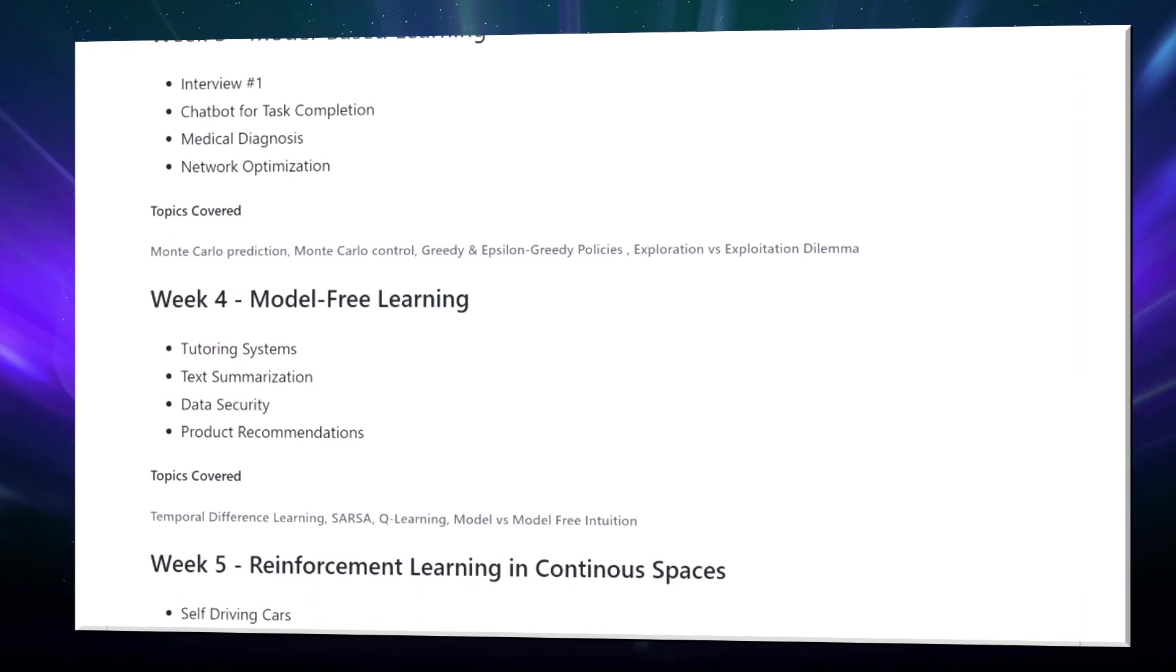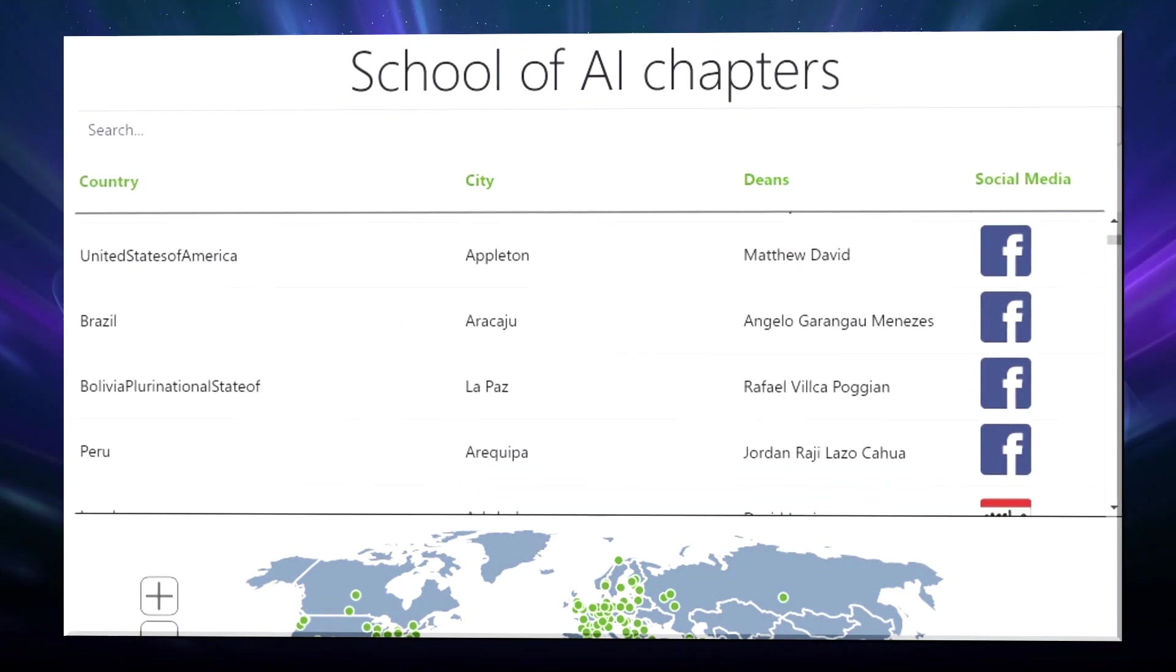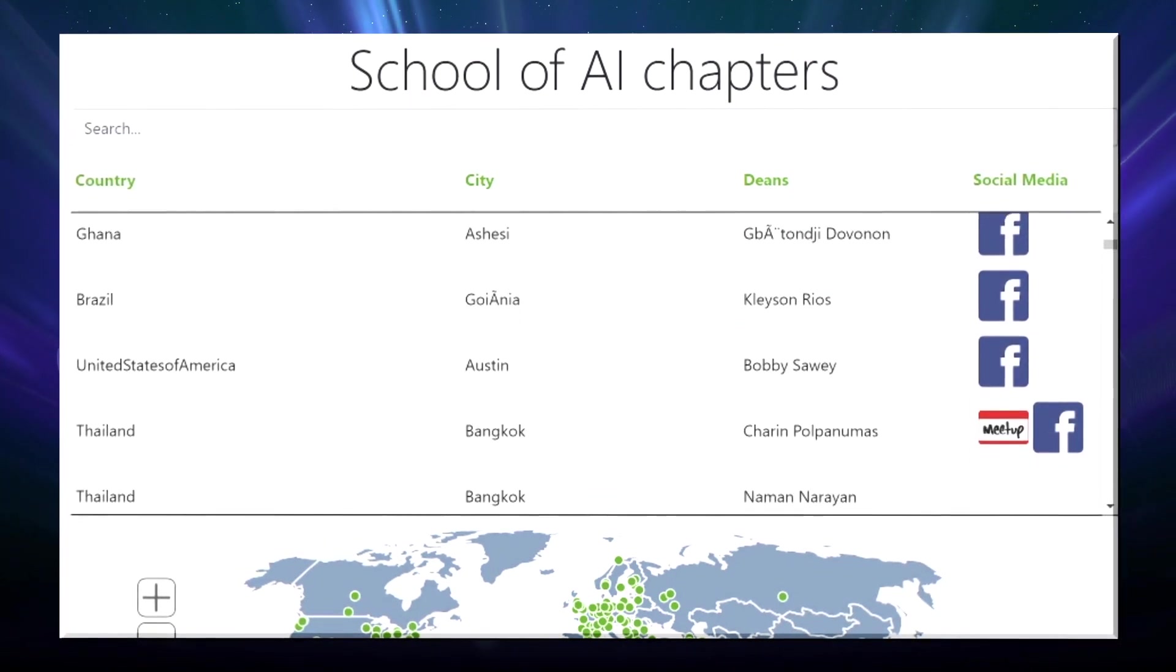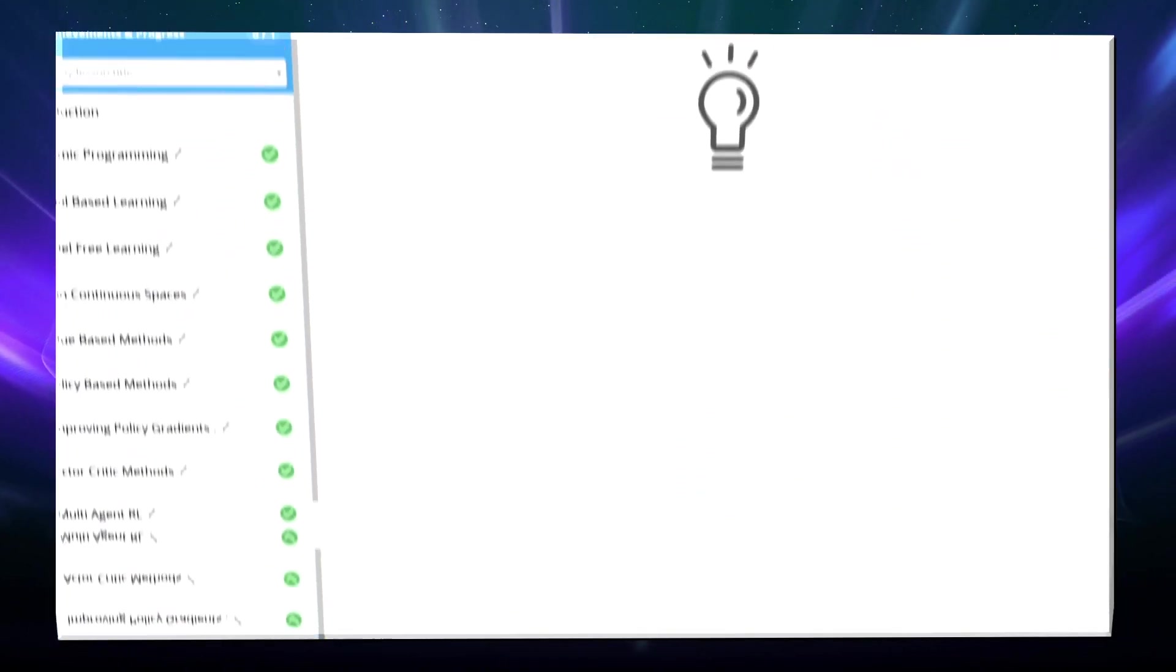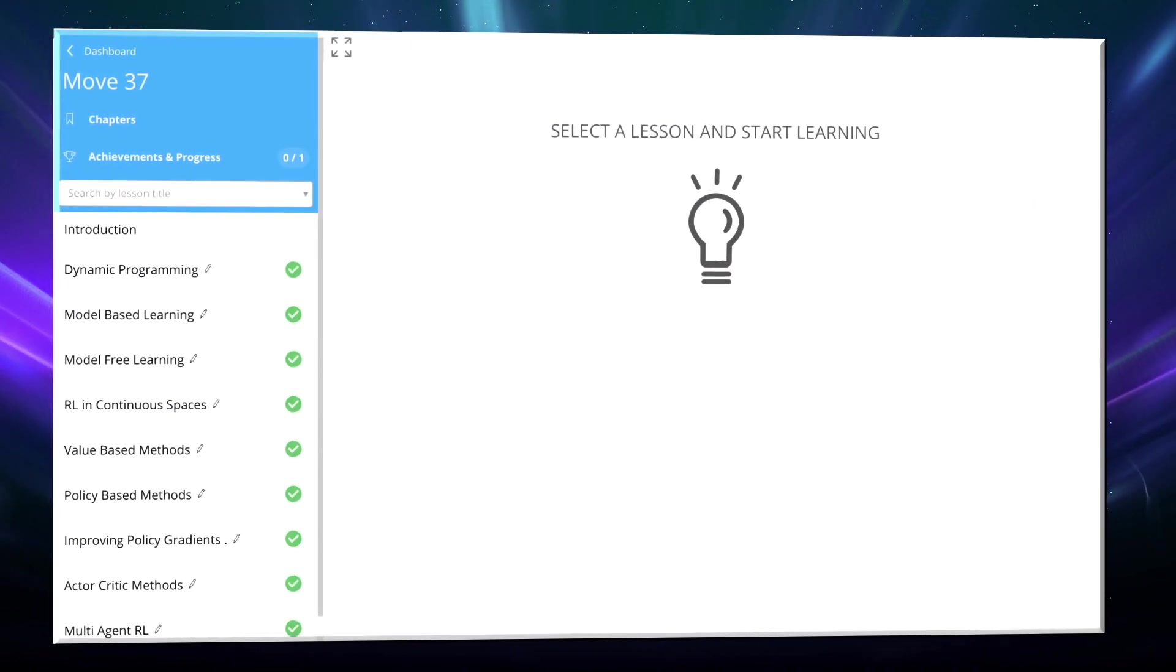You'll be able to measure your progress along the way by chatting with your peers both online and offline at School of AI chapters globally, taking quizzes, coding challenges, and two graded projects.